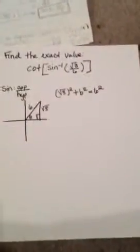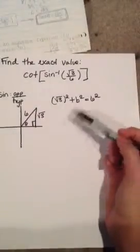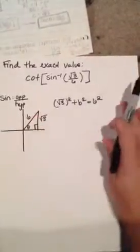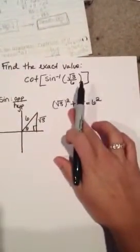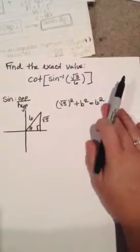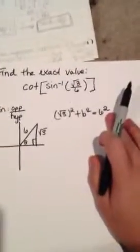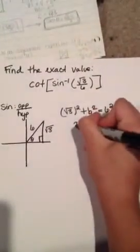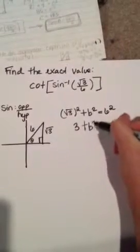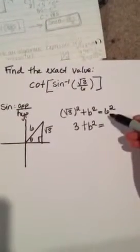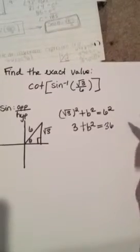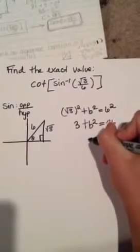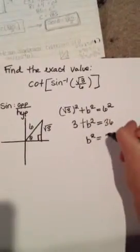So you want to use Pythagorean Theorem because you want to find the other side, you want to find b squared. And b is right here because it's a squared, b squared, c squared. So you do square root of 3 squared plus b squared equals 6 squared. Square root of 3 squared equals 3 plus b squared equals 6 squared equals 36.